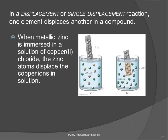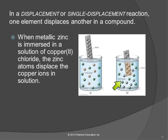Displacement, or single displacement: one element displaces another. In this example we have copper chloride, and you put a piece of zinc metal in it. The zinc will become an ion and pair up with the chloride, and the copper will deposit onto the zinc. You can stick a piece of zinc in a copper chloride solution and it will deposit copper on it without any electricity — it'll just happen. It's kind of cool.